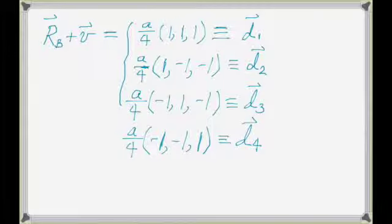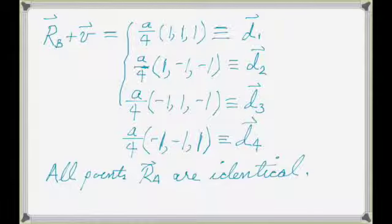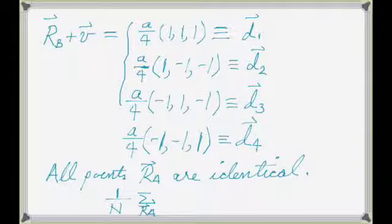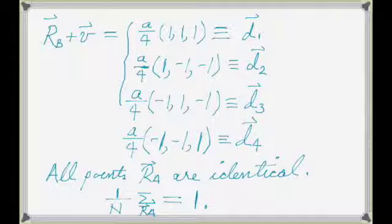Once we do the sum over R_B — the sum over those four nearest neighbors — we're done. Just like in the 1D problem, after doing the sum over R_B, the argument is not a function of R_A, so the sum over R_A just cancels the normalization factor 1/N. The result is simply a sum over the four nearest neighbors, just like in the 1D problem.